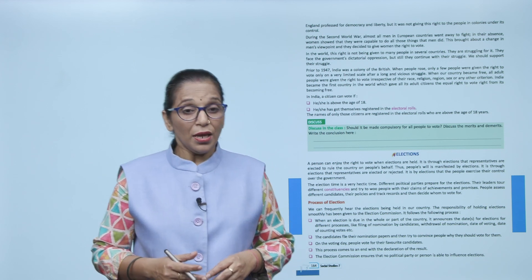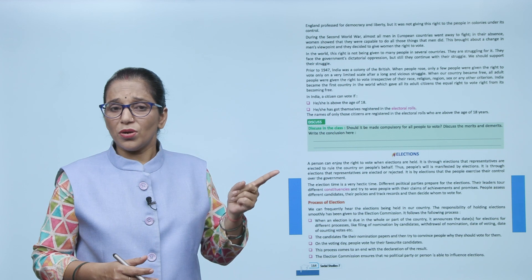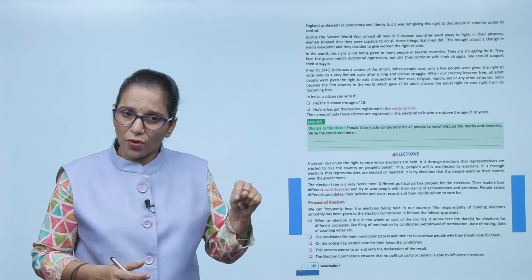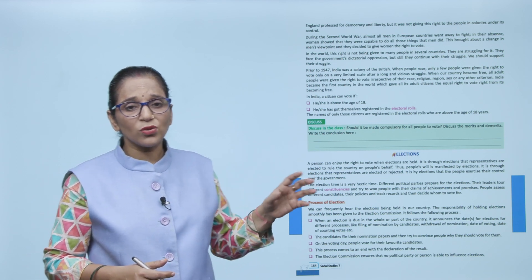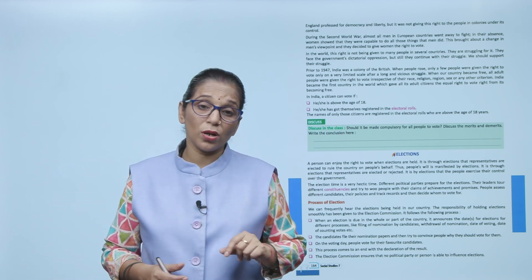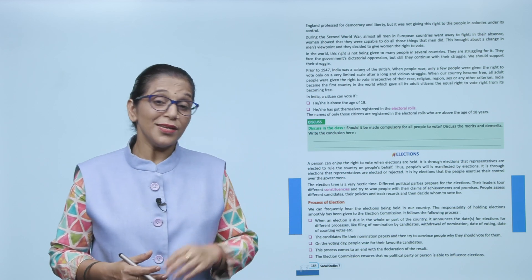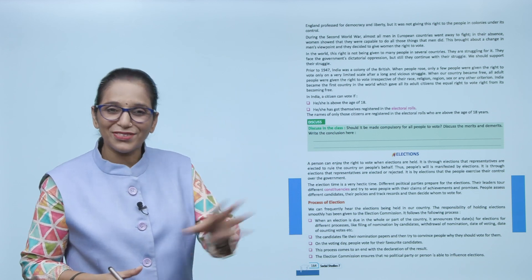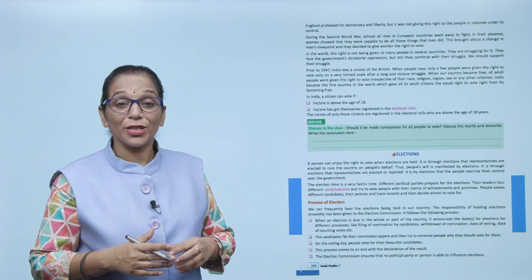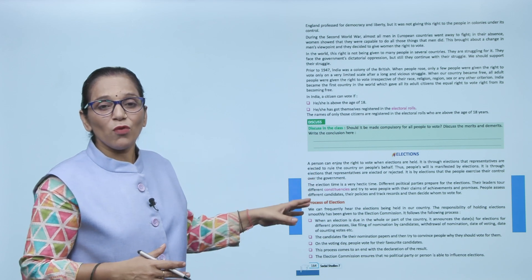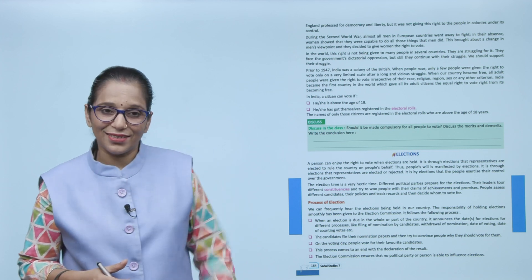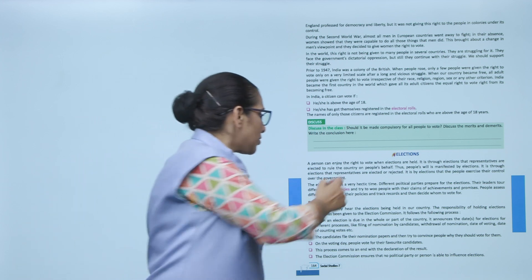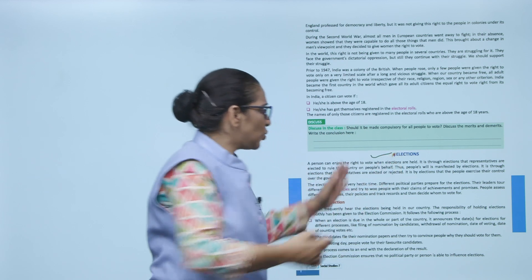All adult citizens were given equal rights when India became free. In India, a citizen who is above 18 years of age can cast their vote. The person has to get themselves registered in the electoral roll. You need to register your name in the electoral roll; only then you get your EPIC — Election Photo Identity Card, which is the voter ID. Only those citizens above 18 years are registered in the electoral roll.